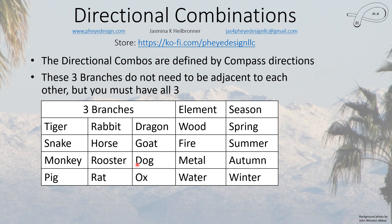Then we have the monkey, rooster, and dog — they create metal, and that's associated with autumn. The rooster has yin metal, and the monkey and the dog also have metal. The rooster is in the west, the horse is in the south, the rat is in the north, and the pig and the ox surround it. The rat has yin water as its main chi, so that's associated with water and the winter.